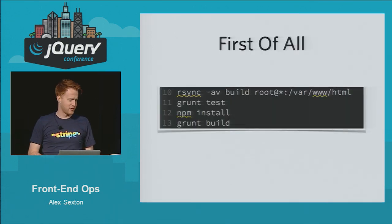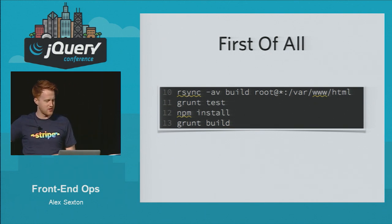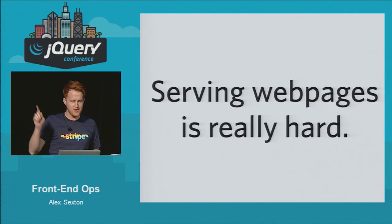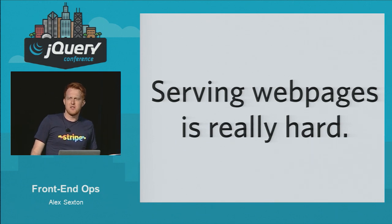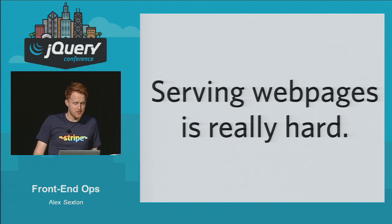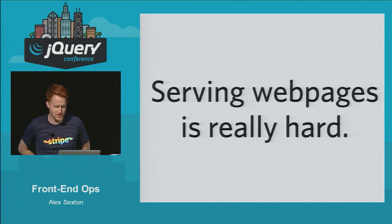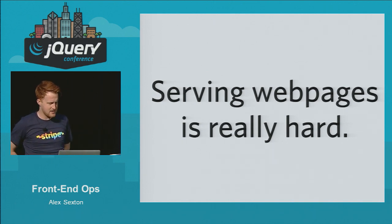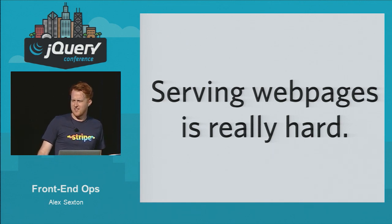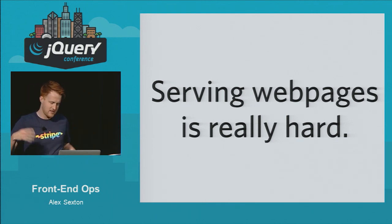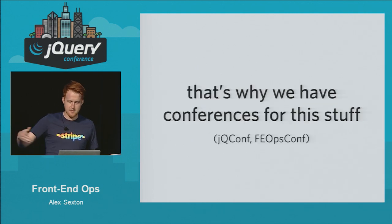Here are the four commands: deploy code anywhere, test anything, automate package management, compile code assets. Serving web pages is really, really hard and there are a lot of steps. Web development is just increasingly complicated ways of concatenating strings together, but we keep adding new layers of complexity. We don't have conferences for things that are easy — that's why we talk about front-end ops.